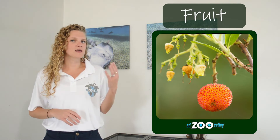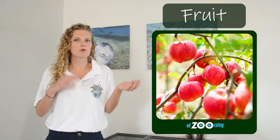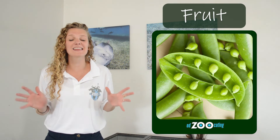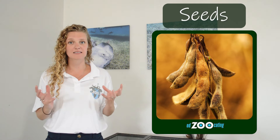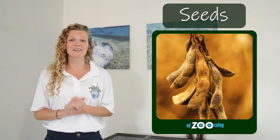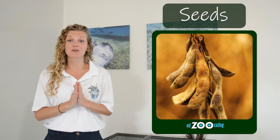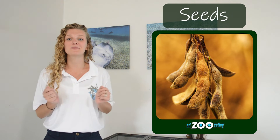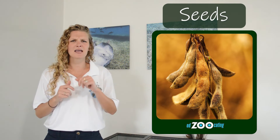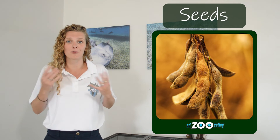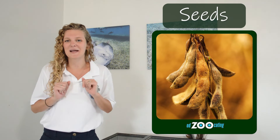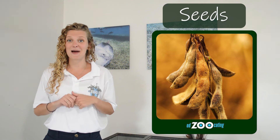Once pollination occurs, something really special happens — plants start to grow fruits. Fruits can be anything from an apple to a green bean, or anything that houses seeds. The fruit has one main job, and that is to store and protect the seeds until they're developed and ready to be spread around the environment. Seeds can be spread by wind, water, or even animals who bump against them or eat them and poop them out later.